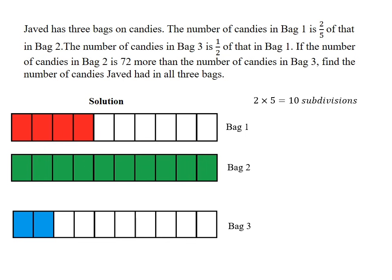Now, they added further that bag two has 72 more candies than bag three. This means that this represents the 72 candies. Looking carefully, you will see that this consists of eight subdivisions. So we can see eight of the boxes of the subdivision is equivalent to 72.